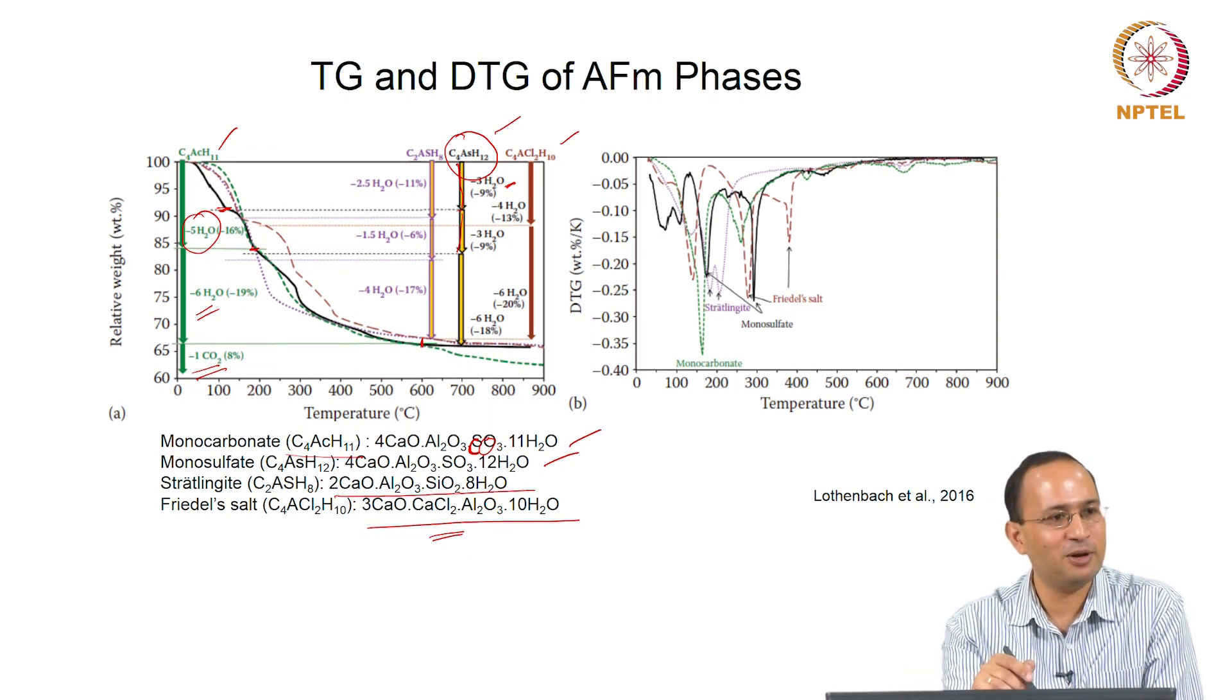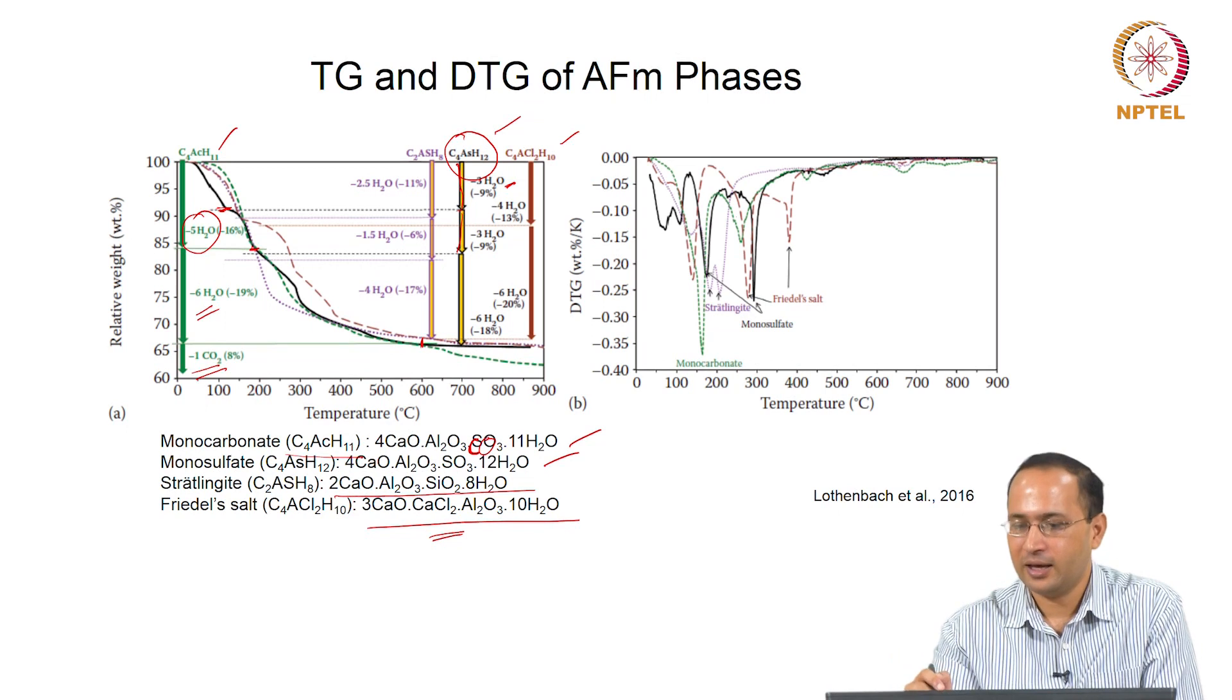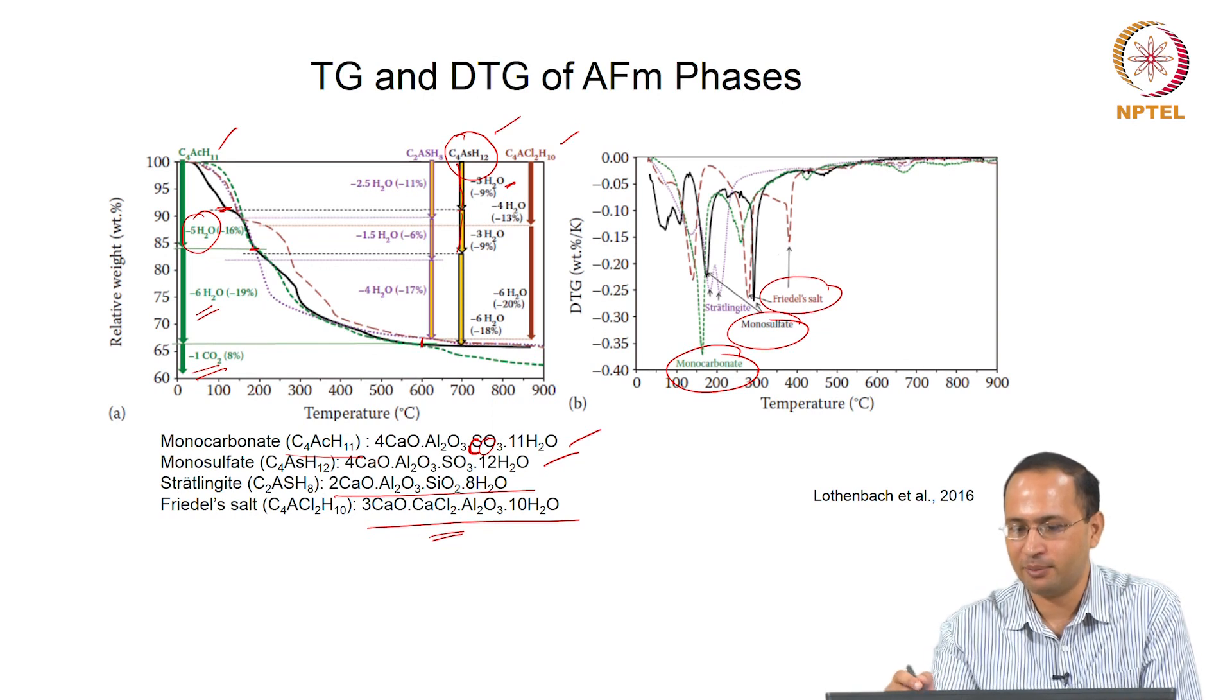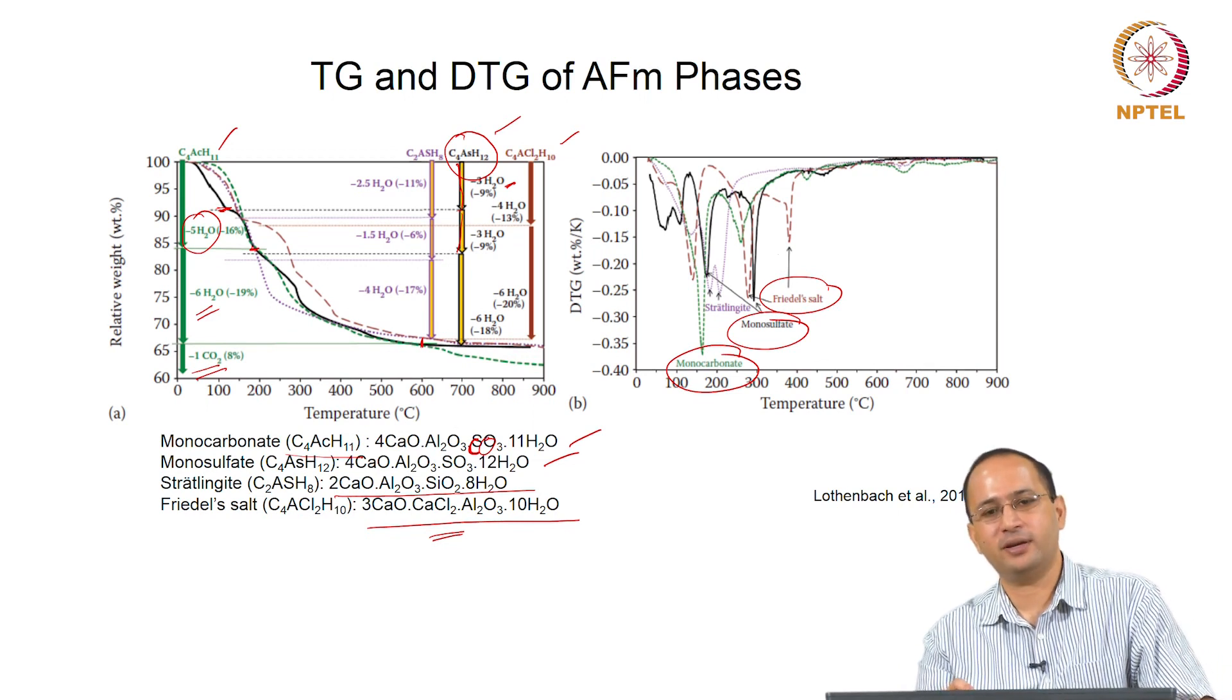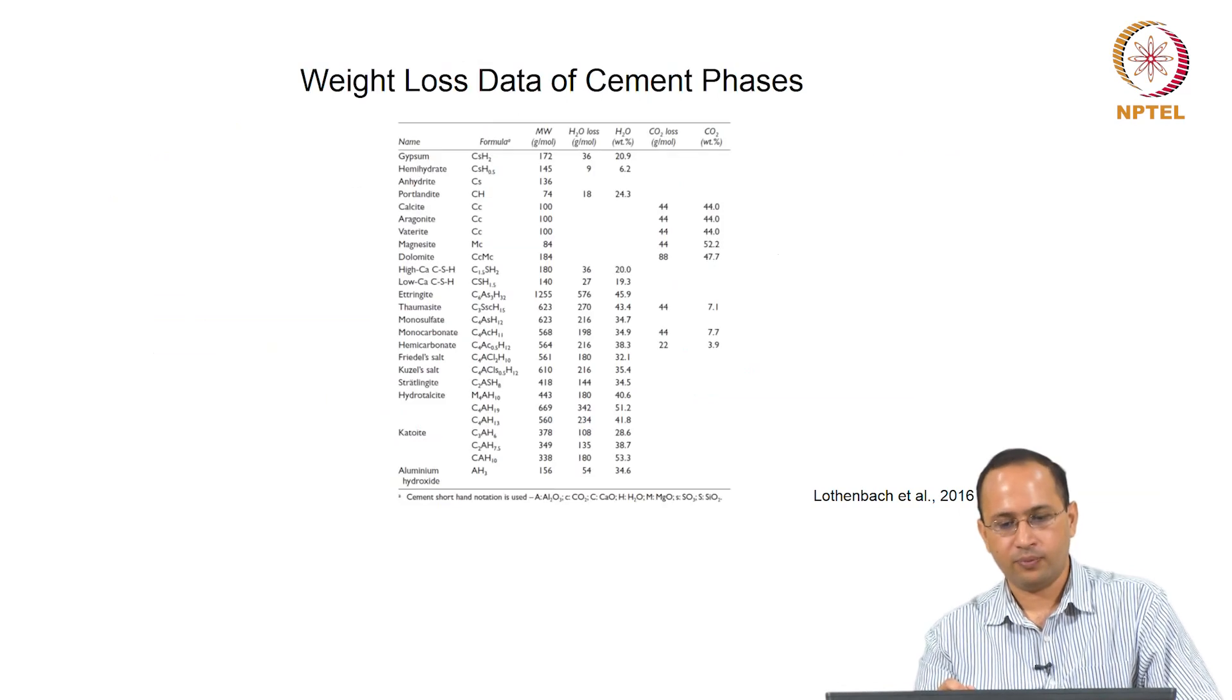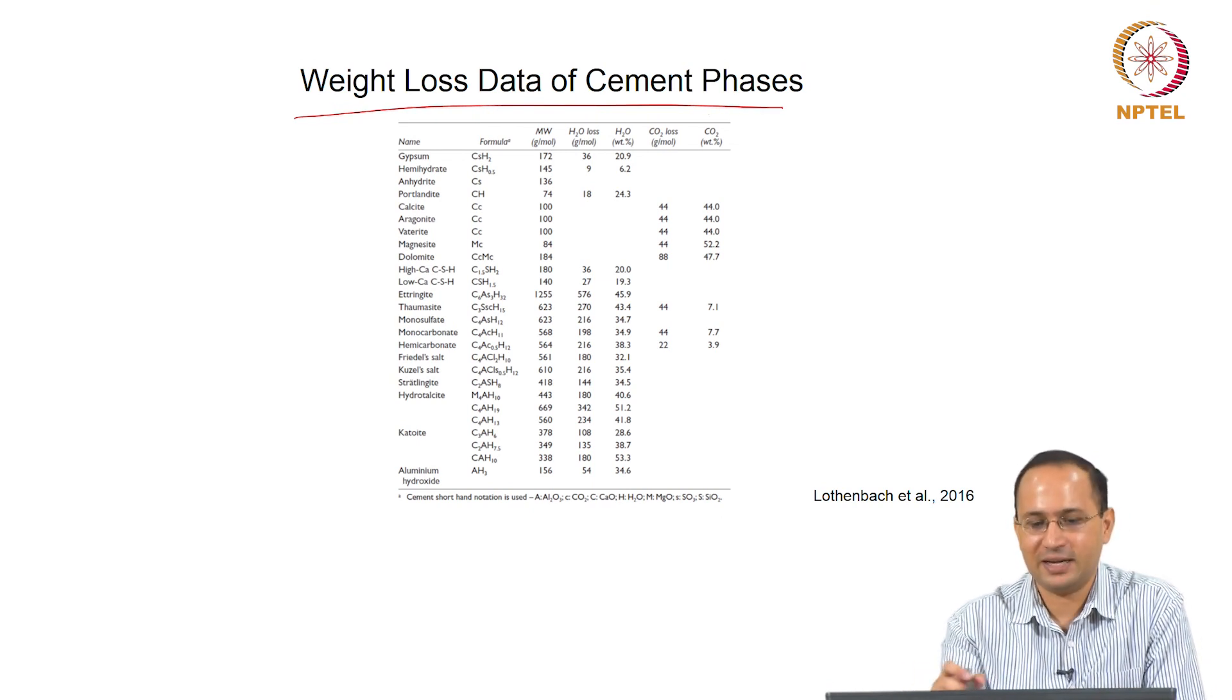This is the DTG - when you take derivative, you will see appearance of these peaks because the slope is changing. Monocarbonate, monosulphate, Friedel salt - sometimes you have a couple of peaks, multiple peaks. These are the things you have to pay attention to, depending on what kind of phase composition you have.